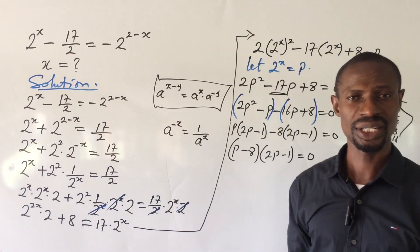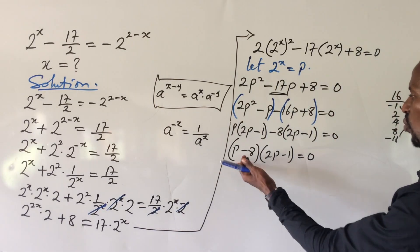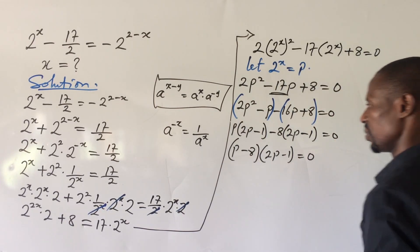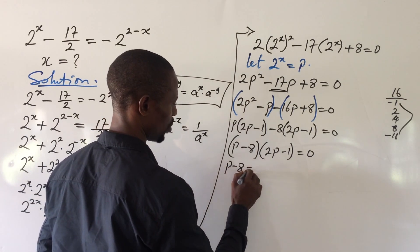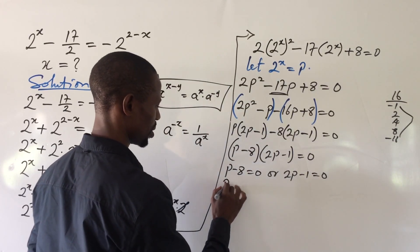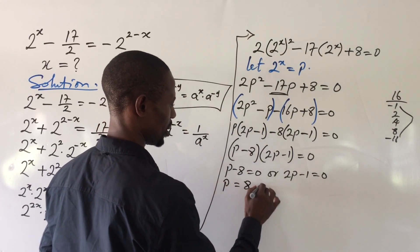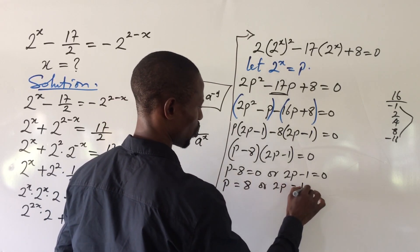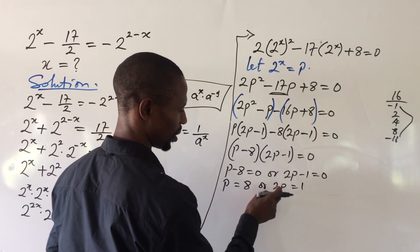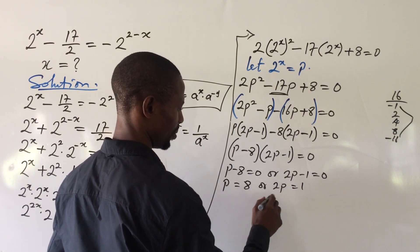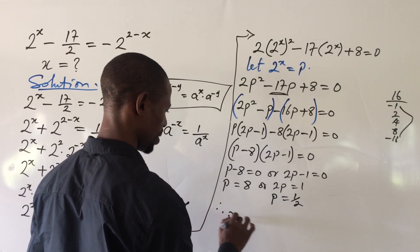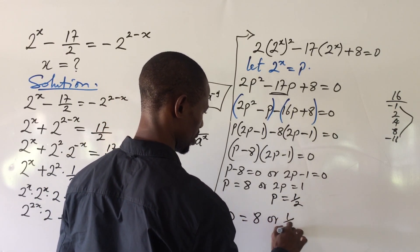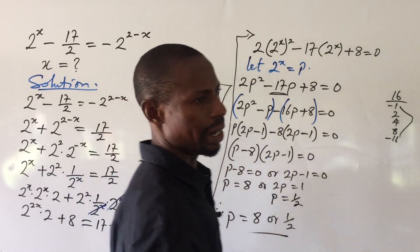Applying the zero product rule, we set each factor equal to zero: p minus 8 equals 0, giving p equals 8; or 2p minus 1 equals 0, giving 2p equals 1, so p equals 1 over 2. Therefore p equals 8 or p equals 1/2.